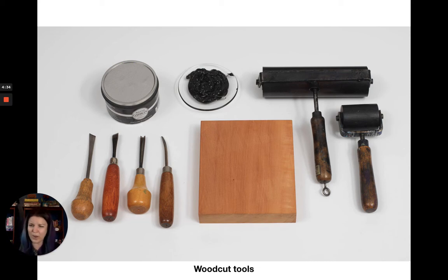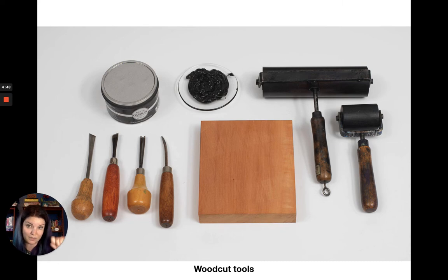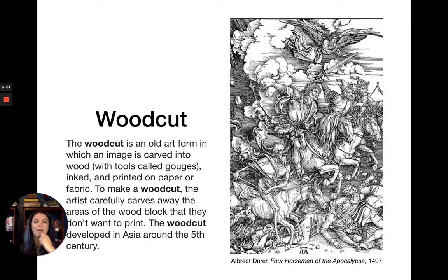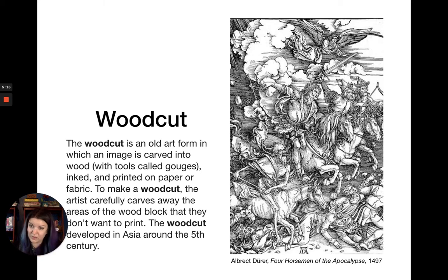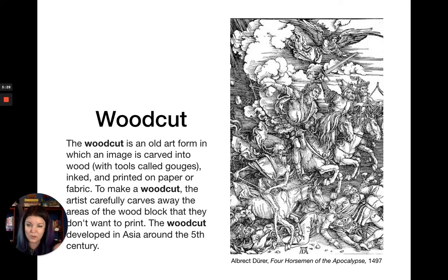For woodcut tools you have a literal block of wood that you carve into. The cutting tools have different shaped points so they can make different kinds of lines. Then you have your ink, a roller to roll the ink onto the surface, and another roller to press the paper flat against the block after carving. An image is carved into wood with tools called gouges; the ink sits on top of the relief—the raised areas above where you carved—and is printed onto paper or fabric. The artist carves away the negative image, leaving the positive lines raised up high so that's where the ink goes.